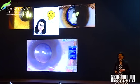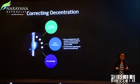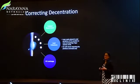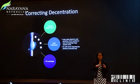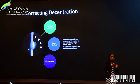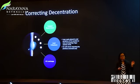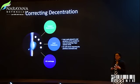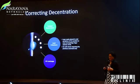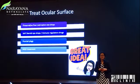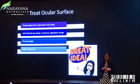Do aim for centration. If you feel later on that there is a little decentration, you can play around with the pupil — bring the pupil down to get rid of exposed diffractive rings, or do iridoplasty. If it's really, really off-center, then you have to be mentally prepared to exchange the lens as well.